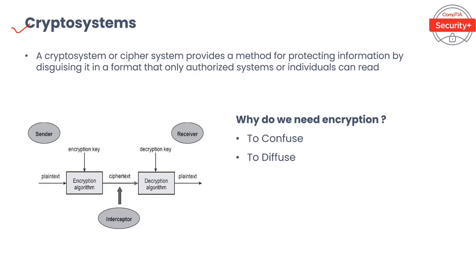A cryptosystem, or cipher system, provides a method for protecting information by disguising it in a format that only authorized systems or individuals can read. The use and creation of such a system is called cryptography. Cryptography involves turning plaintext into ciphertext and then turning ciphertext into plaintext. Specifically, encryption protects confidentiality and safeguards data integrity.